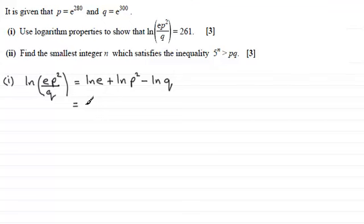Okay, well, we know that the natural log of e is 1. A standard result. And then we've got the natural log of p squared. Well, we can take the two out the front. Remember, that's the power rule for logs. So that's 2 times the natural log of p. And then we've got minus the natural log of q.